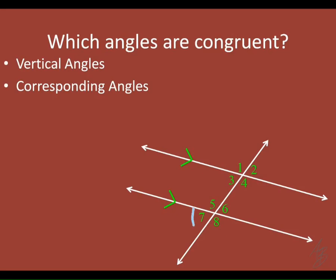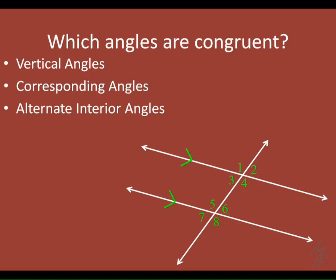Same side exterior angles — like angle 1 and angle 7 — are not congruent; one is obtuse and one is acute. Same side interior angles like 3 and 5 are also not congruent for the same reason. However, alternate interior angles — like angle 3 and angle 6 — are congruent, and alternate exterior angles are also congruent. So of the seven relationships, four are congruent when the lines are parallel: vertical, corresponding, alternate interior, and alternate exterior.